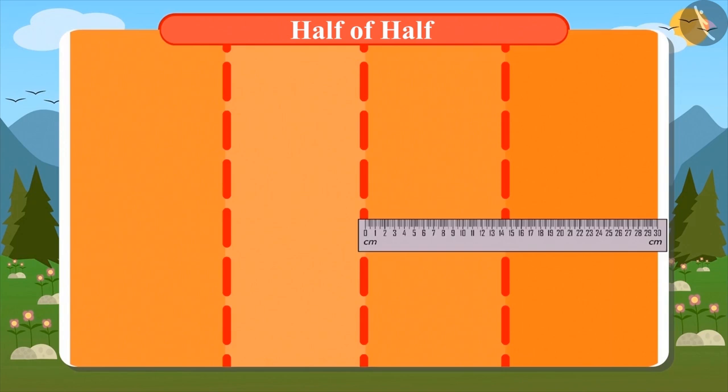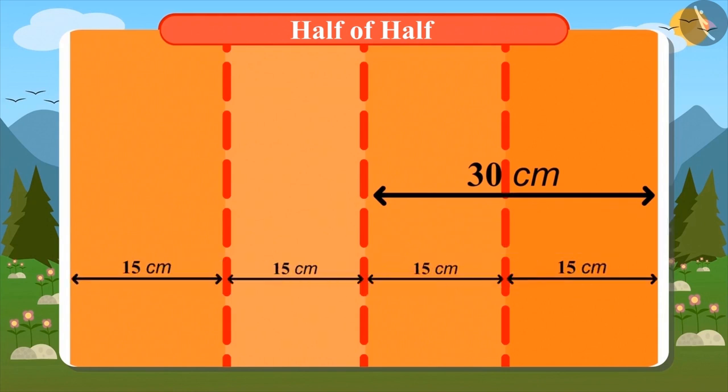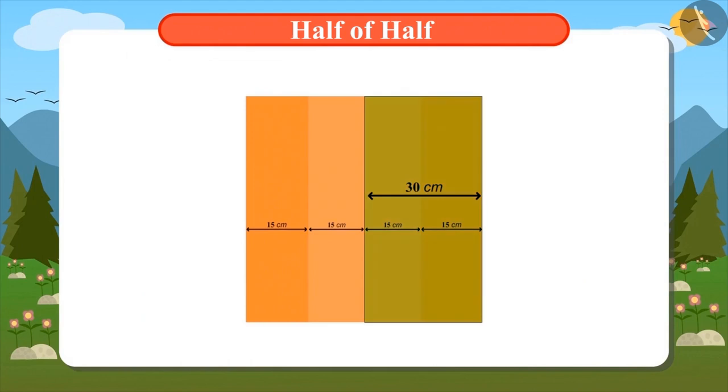One half of this paper is 30 centimeters and half of half is 15 centimeters. Now this paper is divided into four equal parts. Yes. Now look here. This part is half of this paper. When we divided this half into half again, we got this part. Now this half of half part is called one-fourth part of this paper.